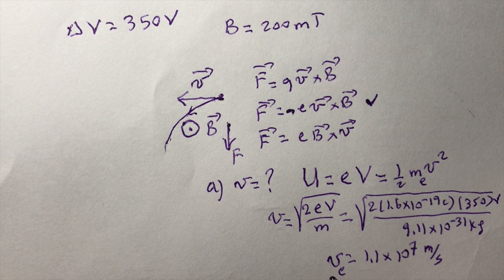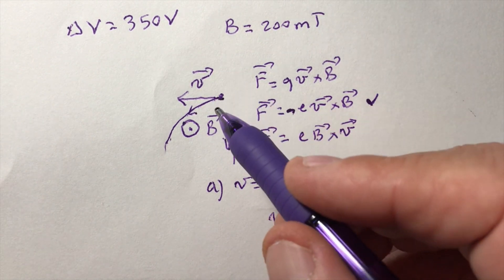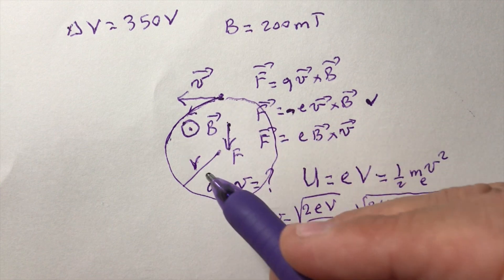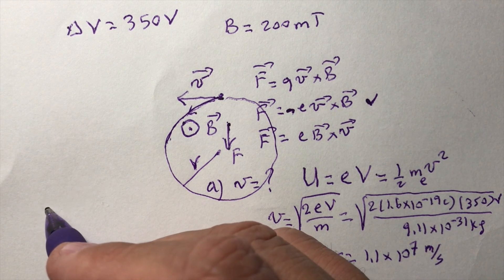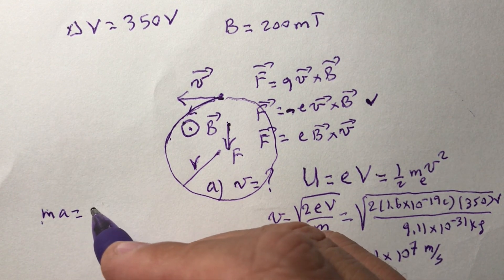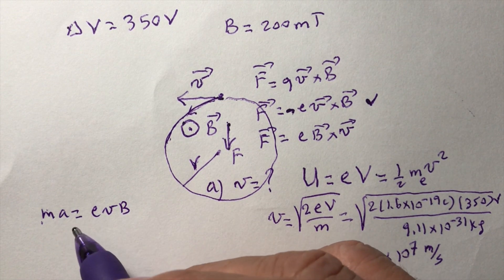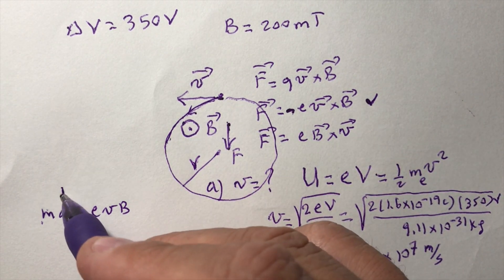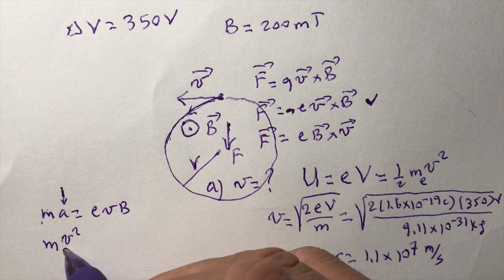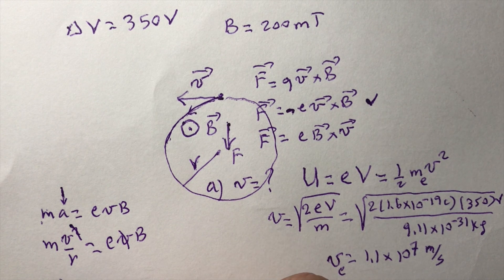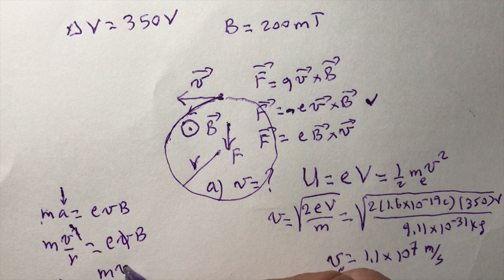For part B, we find the radius of the electron's circular path. Applying Newton's second law: the magnetic force eVB provides the centripetal force, so ma = mv²/r = eVB. Canceling one factor of velocity gives the radius: R = mv / (eB).